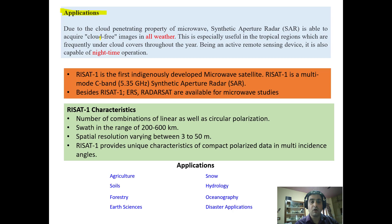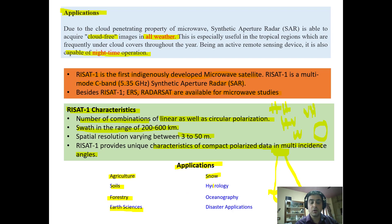Microwave remote sensing can work in all weather conditions because it has the power to penetrate through clouds, providing images even on rainy days. As an active remote sensor with its own source of energy, it can also operate during nighttime — 24 hours whenever required. RISAT is the first indigenously developed Indian microwave satellite, a multi-mode C-band synthetic aperture radar. Applications include agriculture, soil studies, forestry, earth sciences, snow studies, hydrological studies, oceanography, and disaster management.